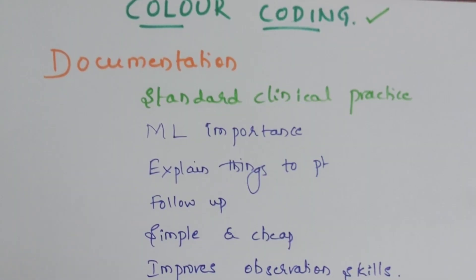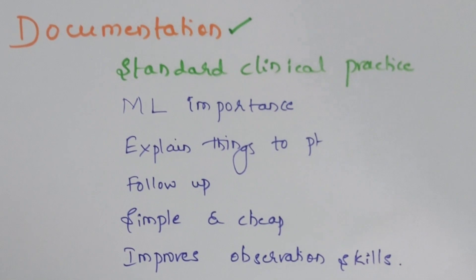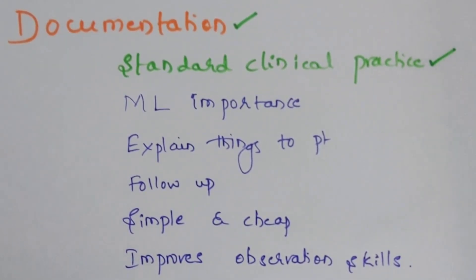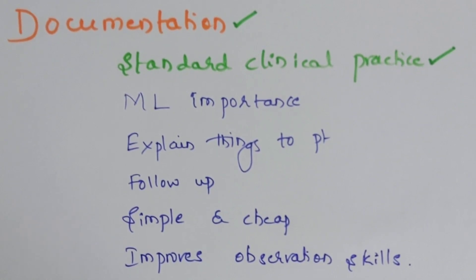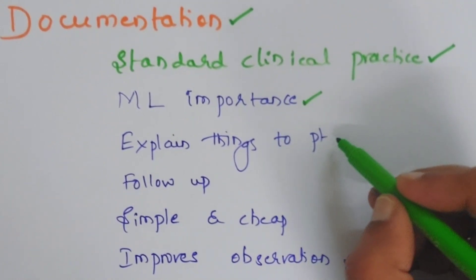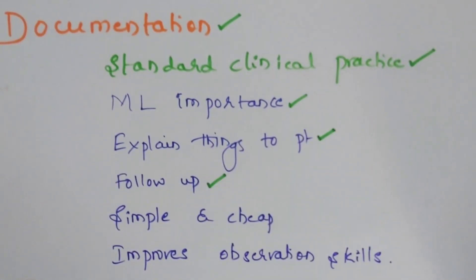First, why should we do color coding? It is one of the ways of documenting what we have observed. Instead of writing many sentences and pages, you can draw the diagram and coat the lesions with the appropriate color — that is the perfect documentation of the clinical picture. We document because it is practiced worldwide as a standard clinical practice, so any ophthalmologist anywhere in the world can appreciate it. It also carries an important medical-legal aspect, as the diagram is evidence of what the patient had. It also helps in explaining lesions to the patient easily, and even for follow-up — patients can understand whether their corneal or retinal lesions are improving or worsening.